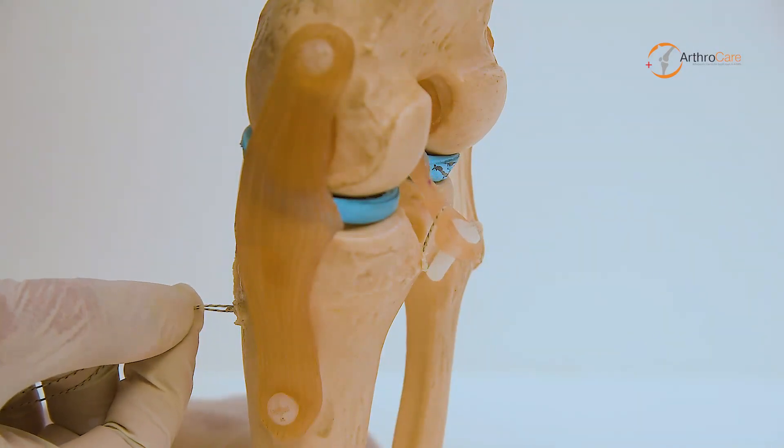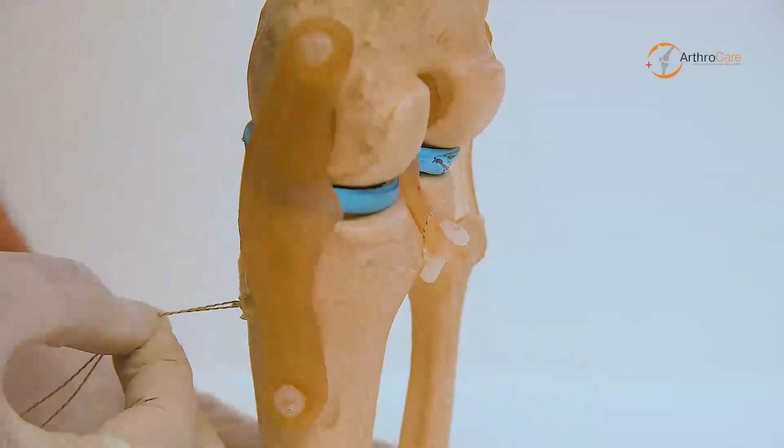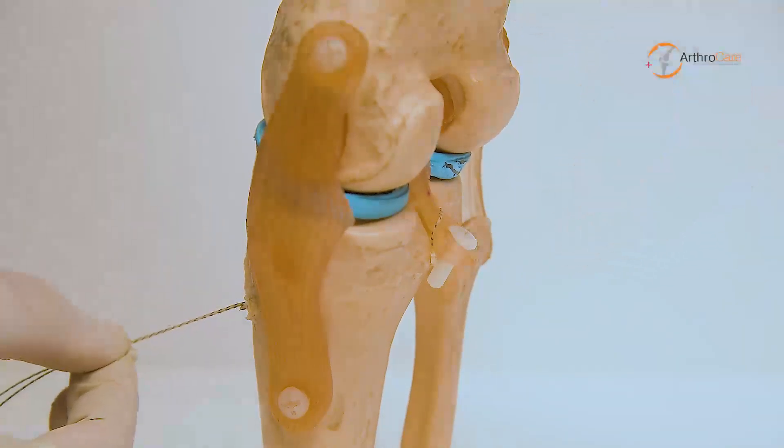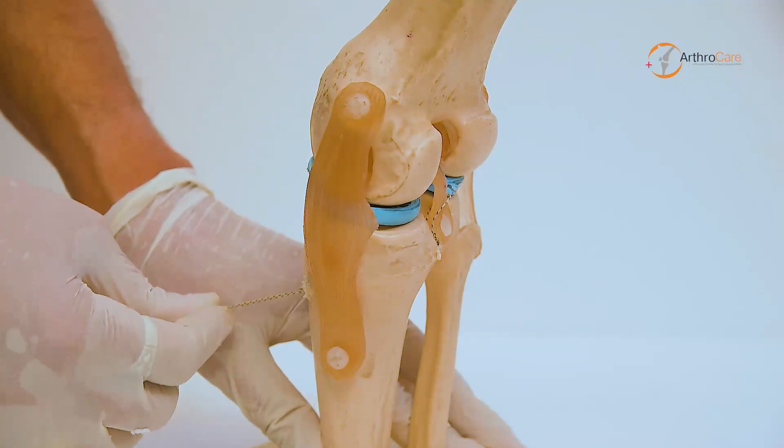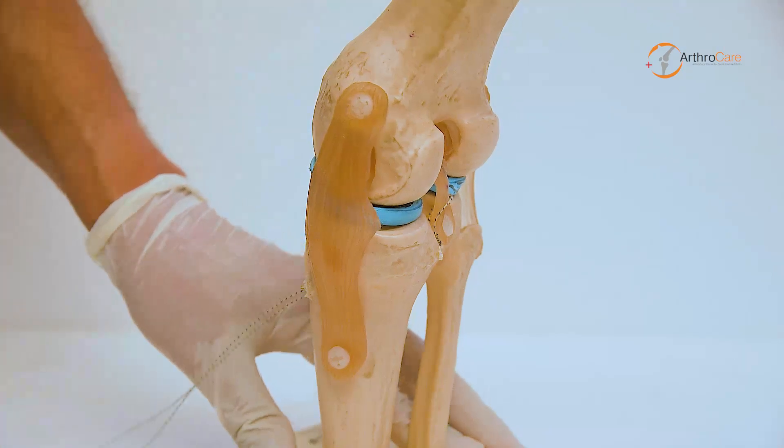You can see the PCL along with the fragment being pulled to its normal and original position. The fracture is reduced and the wire is tightened anteriorly.